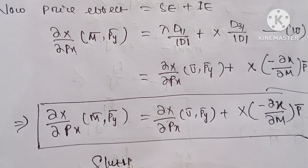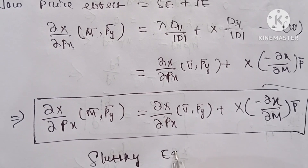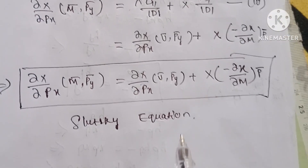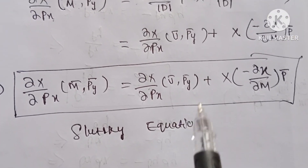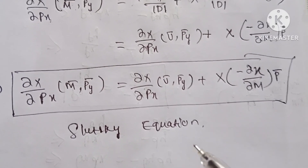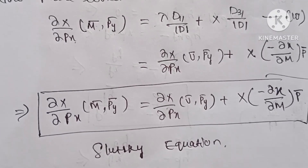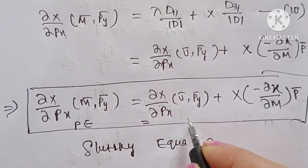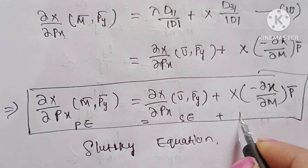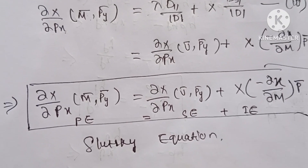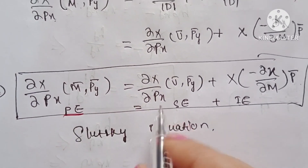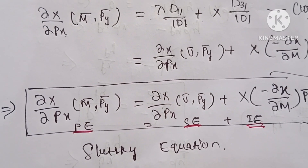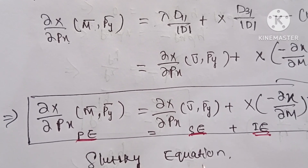This is the Slutsky equation. This equation gives us the rate of change in purchases of a commodity due to changes in its price, expressed in terms of the income effect and substitution effect. So price effect, or total effect, equals substitution effect plus income effect. This is the derivation of the Slutsky equation. Thank you, have a nice day.